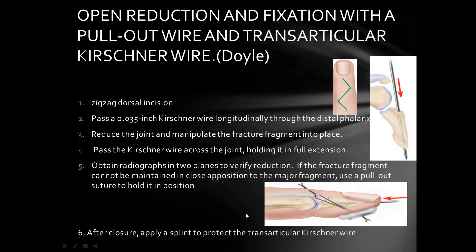In open reduction and internal fixation using the pull-out suture technique described by Doyle, a zigzag dorsal incision is made. A 0.035-inch K-wire is passed longitudinally through the distal phalanx and across the distal interphalangeal joint in extended position. Radiographs are taken to assess stability. If the fracture fragment cannot be maintained in a reduced position, a pull-out suture with a button is used to hold it. After closure, a cast is applied to protect the K-wire.